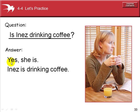Let's make a question from the answer: Yes, she is. Inez is drinking coffee. The question would start with the verb to be first: Is Inez drinking coffee? 'Is' must match the singular third person — Inez, one person, singular. 'Drink' ends in a vowel and two consonants — N and K are consonants — so we add the ing ending and the rest of the question.